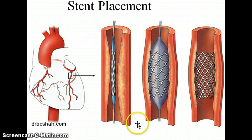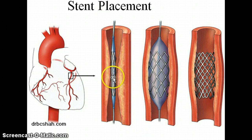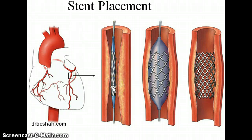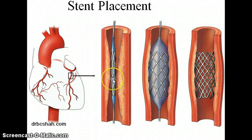Stent placement is used in very much the same way as plain angioplasty. You've got the guide wire, the balloon catheter is threaded onto the guide wire, and there is a stent crimped onto the balloon.